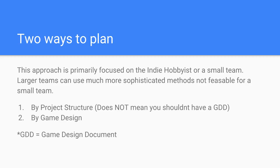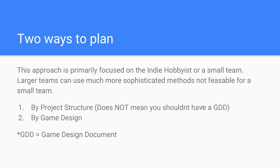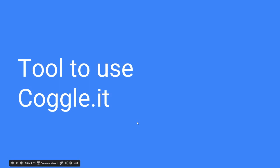I'm going to recommend two ways. One is planning your project by project structure — in Unity terms, the scripts you will be making and how they fit into your overall structure. The second approach is by game design. I should mention that using the first method does not mean you shouldn't have a game design document — you should always have a game design. The tool I'm going to use is cobble.it, which is basically a mind-mapping tool. It's a really good way to plan your project.